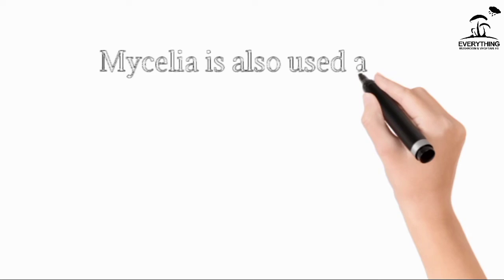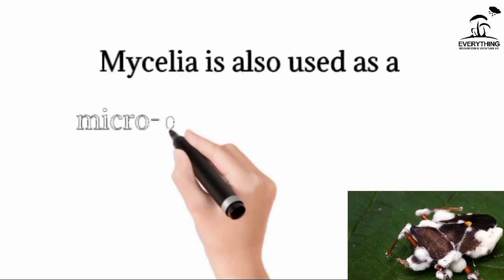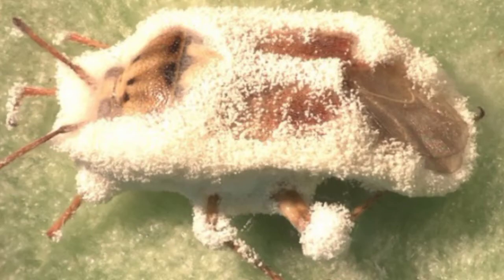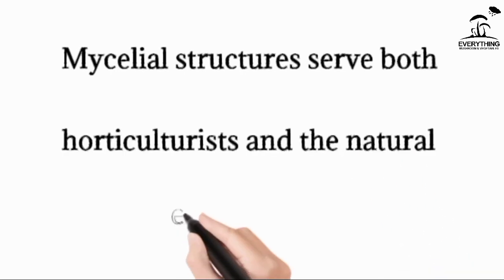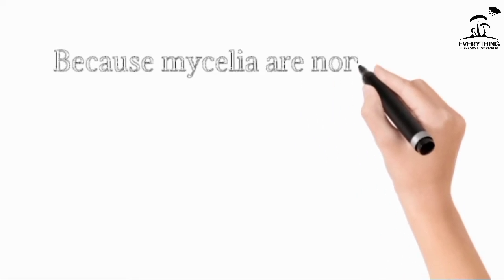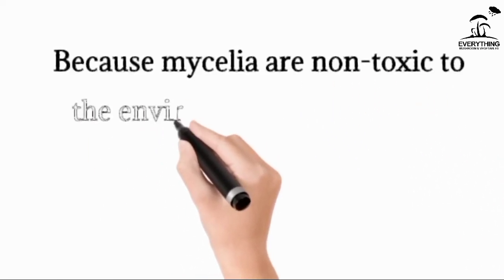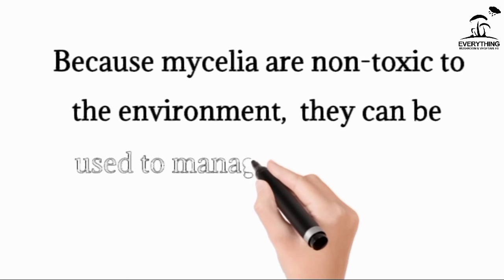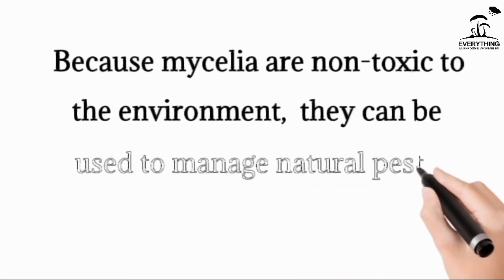Fungi are used for insect control because they can penetrate through the insect cuticle. Examples of such fungi are Beauveria bassiana for the control of whiteflies, thrips, and corn borer; Metarhizium anisopliae for thermal treatment; Paecilomyces species for control of whiteflies; and Verticillium lecanii for the control of whiteflies and thrips. With the use of fungi to control insects, there is no chemical release to the environment, therefore it enhances environmental protection because mycelia are not toxic to the environment.